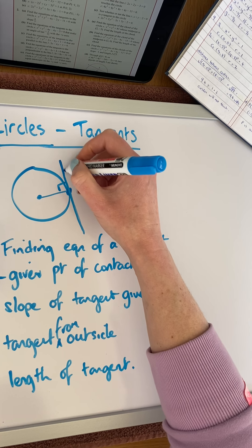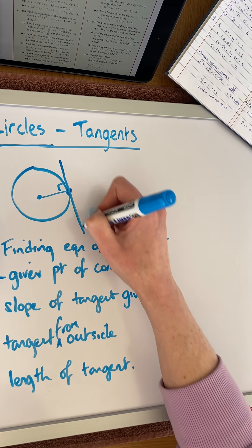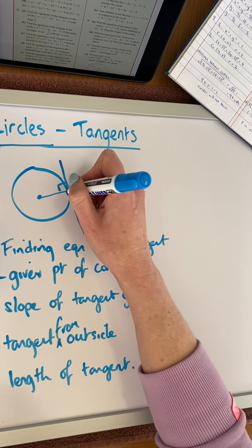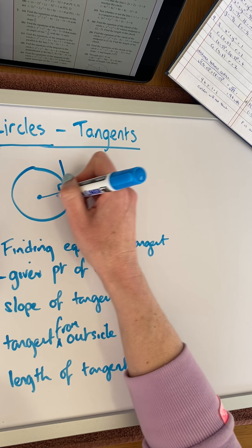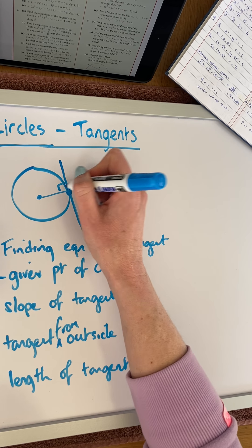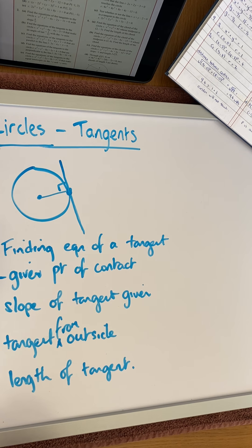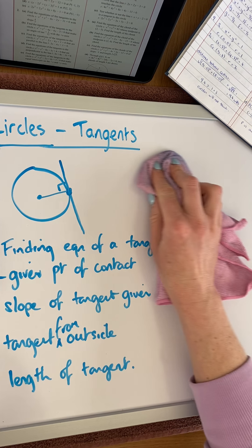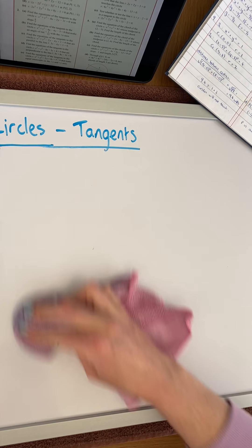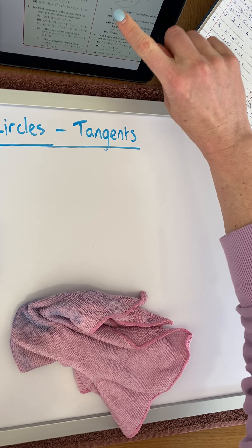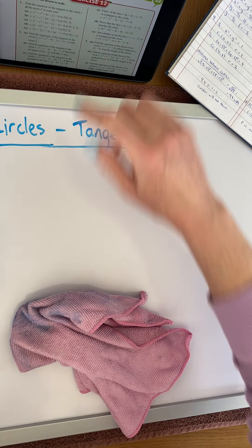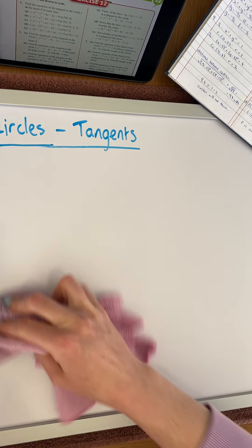Remember, a tangent is a straight line that touches a circle at one point only, and is perpendicular to the radius at the point of contact. That information is going to be key in terms of solving the questions we're going to be looking at, from exercise 12 on page 331.